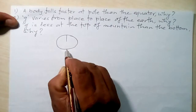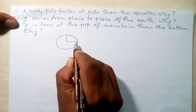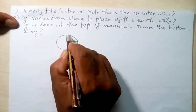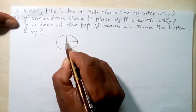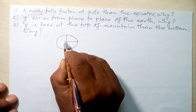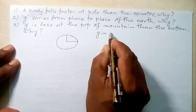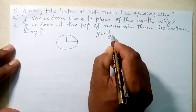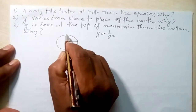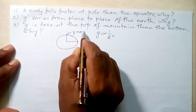Because Earth is flattened at the poles and bulges at the equator, the polar radius is less. This is the North Pole and this is the South Pole — the radius at the North Pole is less than the equatorial radius. Since g is inversely proportional to the square of the radius of the Earth, the value of g will be more at the poles.